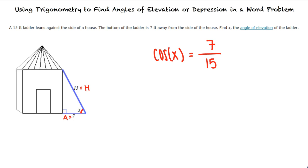To solve for x, we need to take the arc cosine of both sides, which results in x equals arc cosine of 7 over 15. Using our calculator, we find that the angle x is 62.2 degrees.